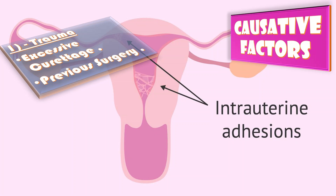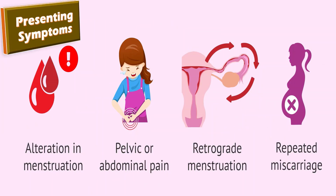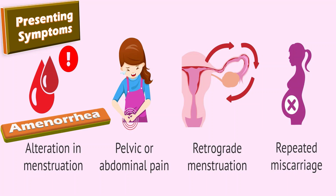The causative factors include: first, trauma like excessive curettage at the time of D&C, or previous surgery like cesarean section, polypectomy, or myomectomy. Another causative factor is infection, which may be in the form of genital tuberculosis or schistosomiasis.